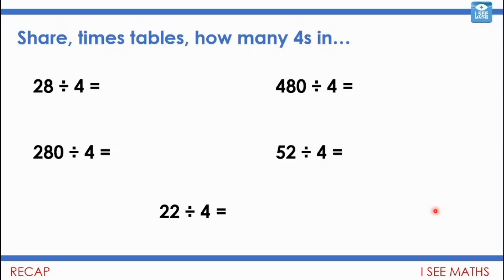So 28 divided by 4, I know the answer is 7 and I'll probably do that just by thinking, well I know that 4 times 7 equals 28, so there I use a times table fact. Now, if I know that, I can also work out 280 divided by 4, it's actually 70. And can you see, it's just because 280 is 10 times more than 28.